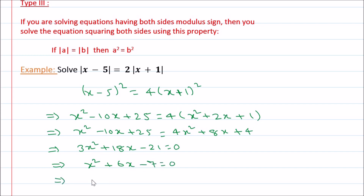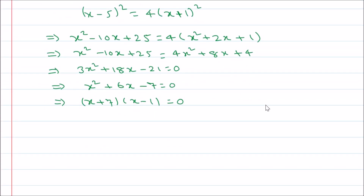Now we will factorize x squared plus 6x minus 7 equals 0. Factorizing: (x plus 7)(x minus 1) equals 0. This implies x equals minus 7 and x equals 1.